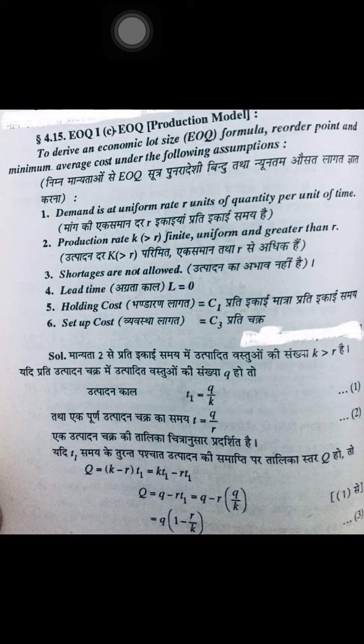EOQ First C model we are taking. In this model some basic assumptions are given to derive its EOQ formula, minimum average cost formula, and cost equations. Here demand is at a uniform rate R units of quantity per unit time — so demand is uniform, as in the earlier two models. Deterministic demand applies in all the models, but here demand is at a uniform rate.